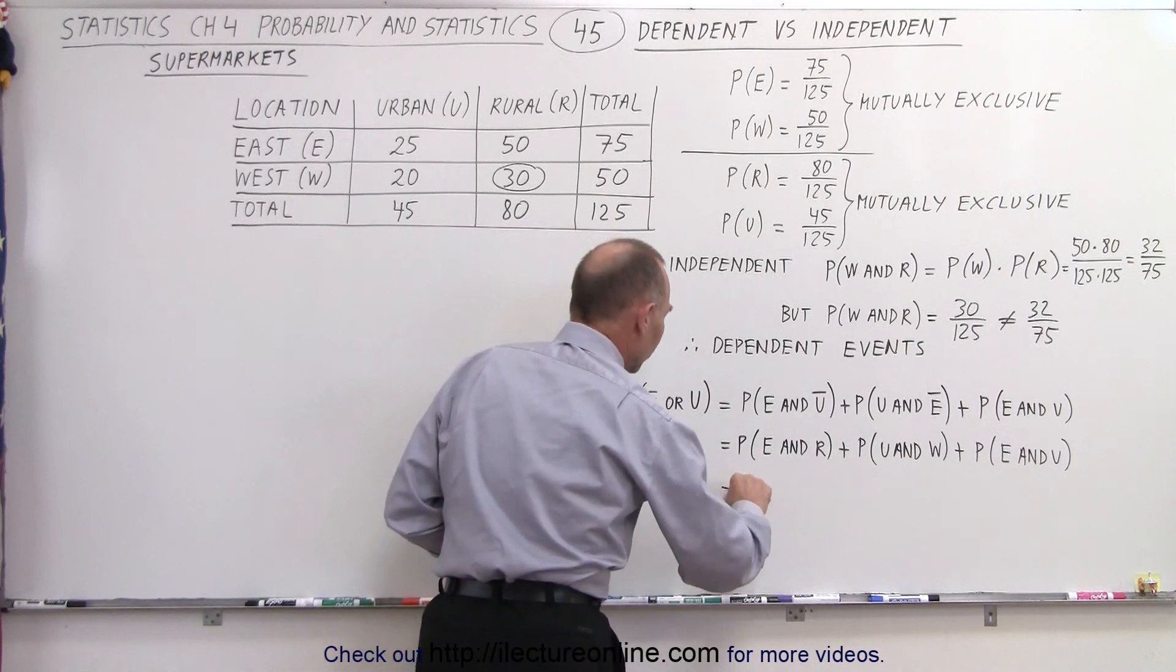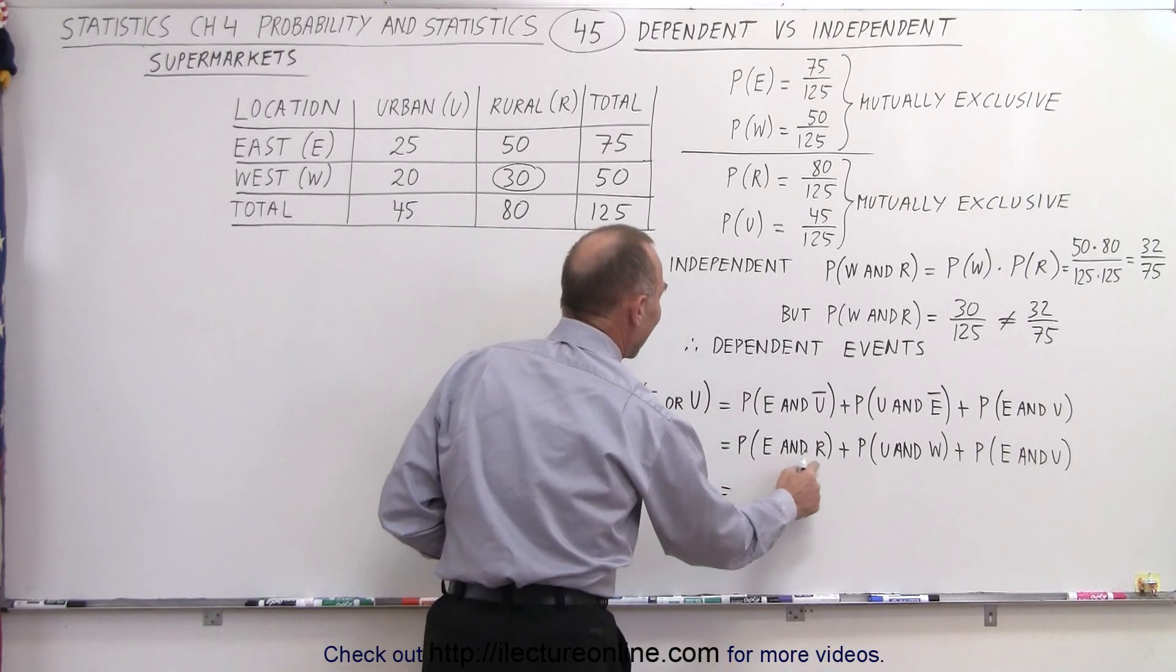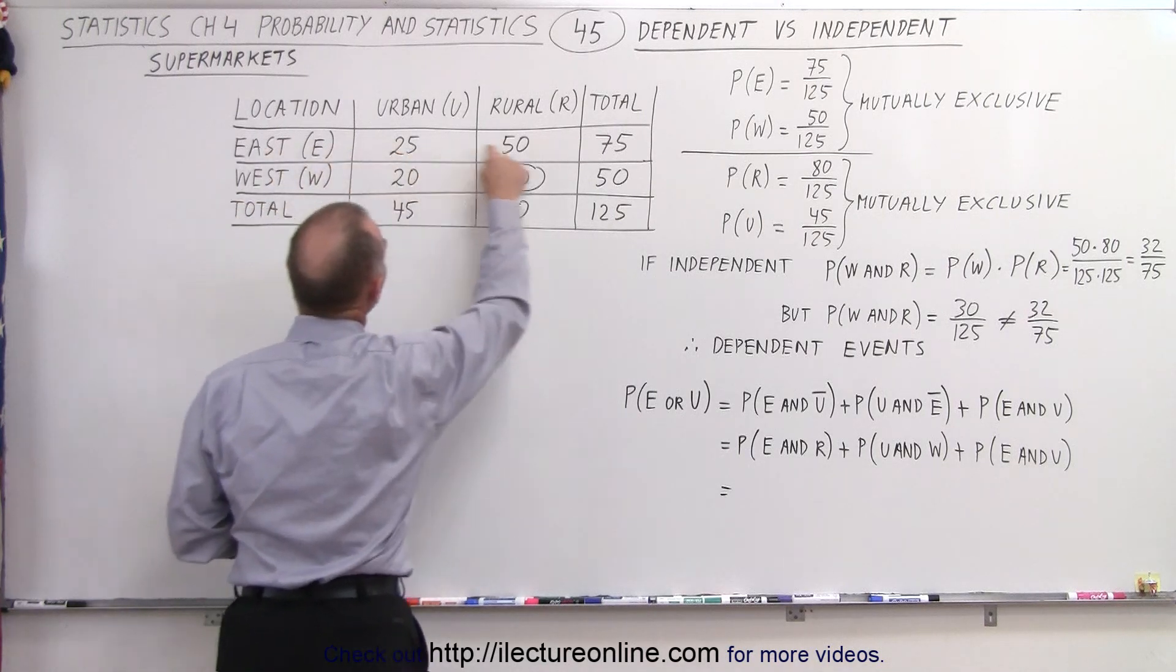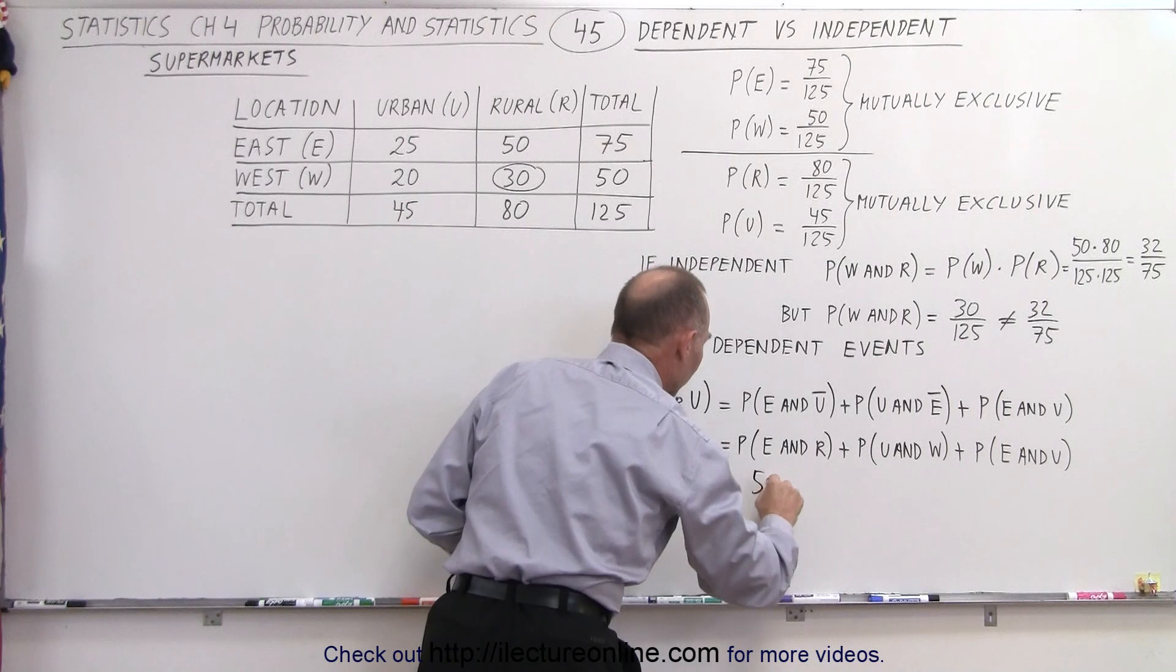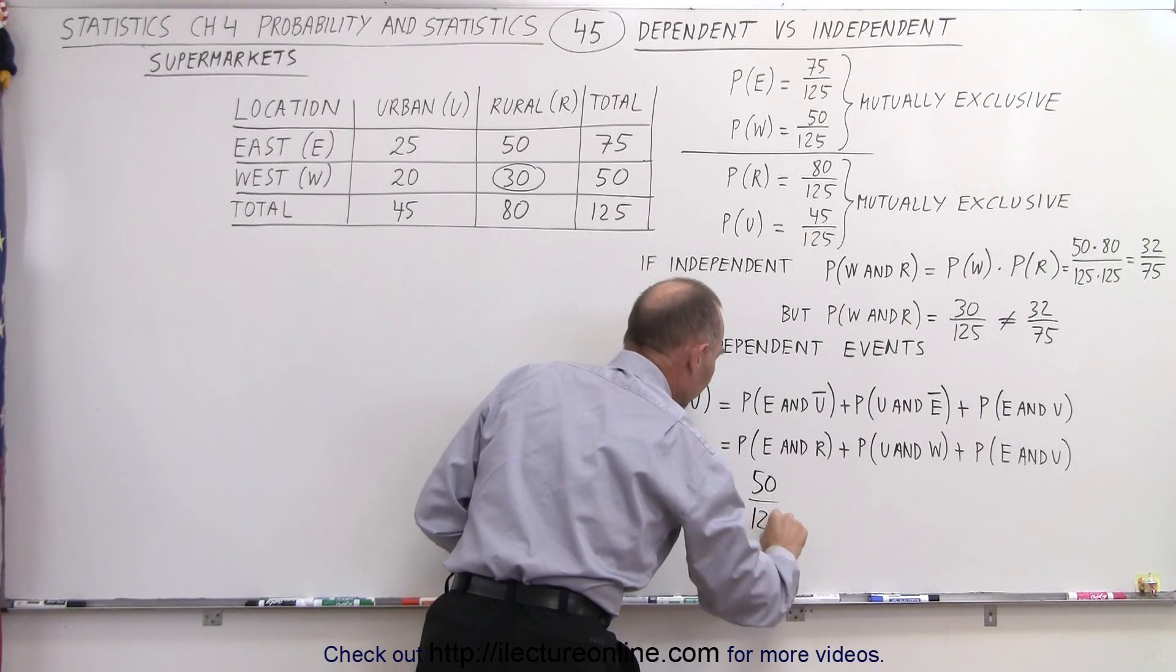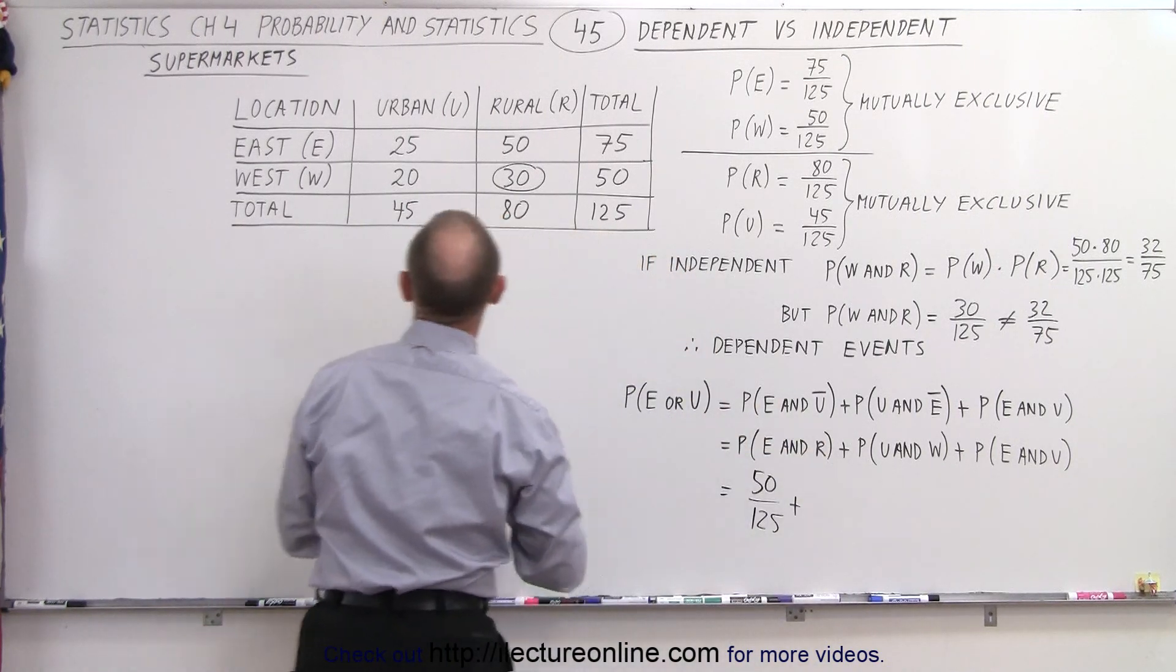So let's try that. So first the probability of east and rural. So here we have east, here we have rural, that would be 50, or 50 out of a total of 125 supermarkets, plus the probability of urban and west.